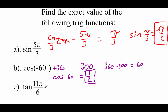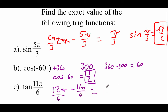Looking at our last one on this page, we've got 11π over 6 as our angle, and we're going to do the tangent. This is really close to 2π, so I'm going to take 2π minus 11π over 6. Common denominators would make this 12π over 6, and that makes our reference angle just π over 6. Now π over 6 is that small 30 degree angle.